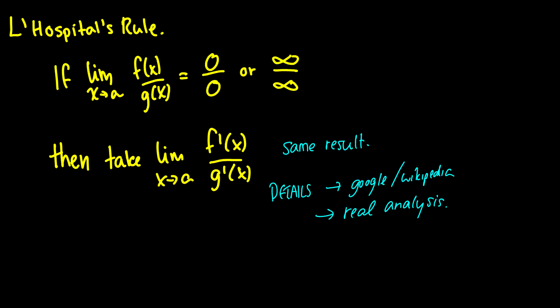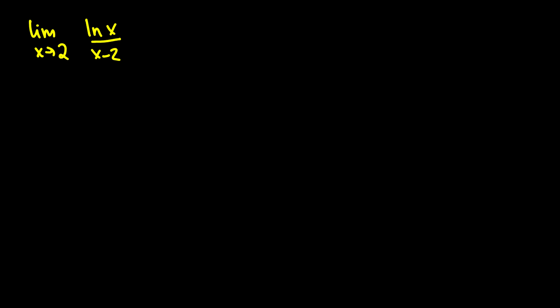So, let's do an example here. Let's take the limit as x goes to 2 of ln(x) over x minus 2. Well, if we plug this in, we're going to get ln(2) over 0,